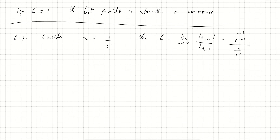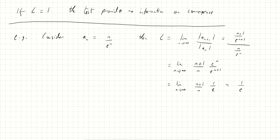We can simplify the algebra: this becomes the limit as n tends to infinity of (n+1)/n times e^n/e^{n+1}. Now e^n over e^{n+1} is 1/e, and as n tends to infinity, (n+1)/n tends to 1. So the limit is 1 times 1/e, which equals 1/e. This is less than one, so the sum from n=1 to infinity of n/e^n is convergent.